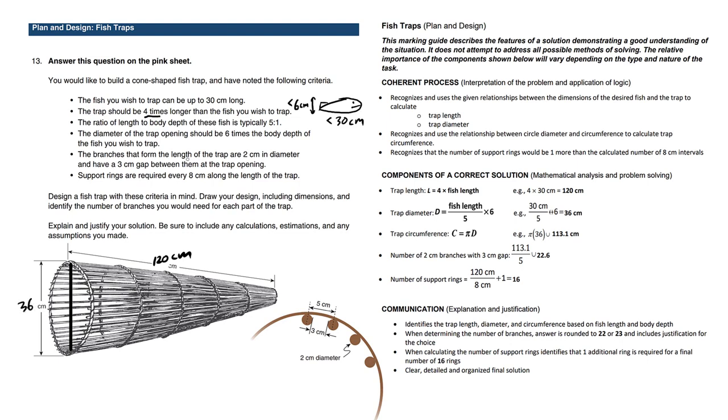The branches that form the length of the trap are two centimeters in diameter. This is an old drawing but looks like it's the same right here and have a gap of three centimeters between them at the trap opening. So this is the trap opening here, this big circle, and yes indeed there's a three centimeter gap.